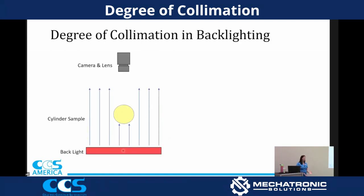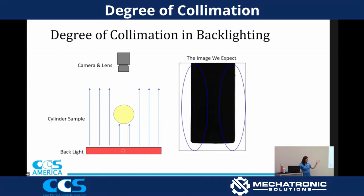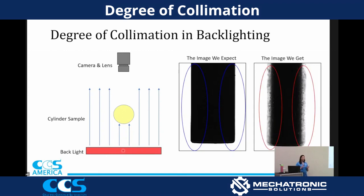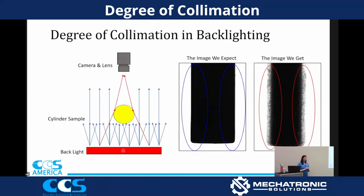Typically we have a backlight and a cylindrical sample, and the light is shining straight up — this is kind of what we picture a backlight to look like. Our image should look something like this: super clear, crisp lines, easy measurement. But a lot of times we get an image that looks unclear with very poor lighting. Why is our image not what we expect? That's because backlights don't shine up in perfectly straight directions — they are diffuse. The light shines in multiple directions, meaning there's a scenario where light hits the top of our sample and reflects into our camera, coming around the edges and going up into the camera, so we're not getting that clear edge.